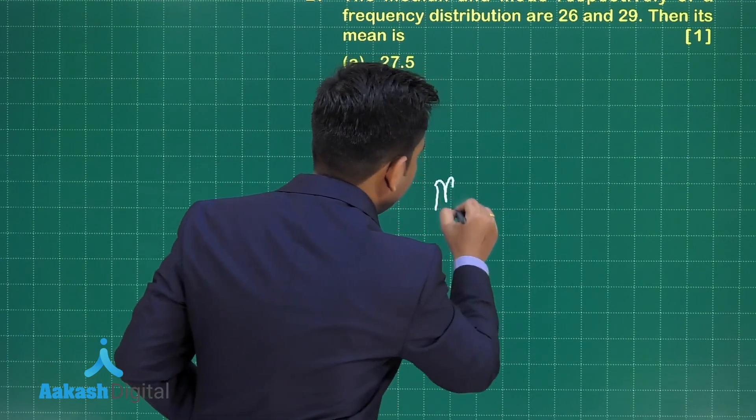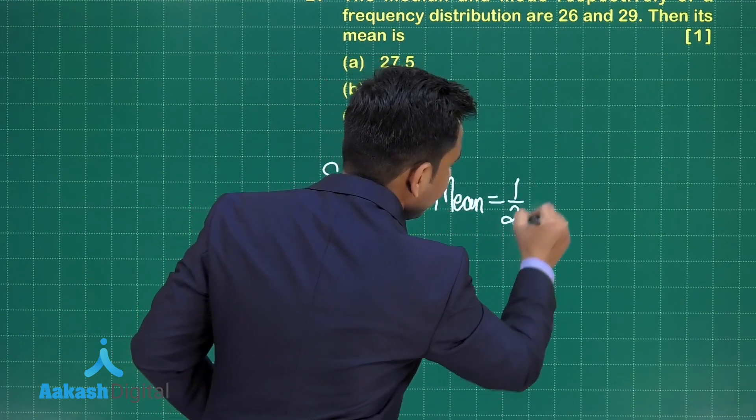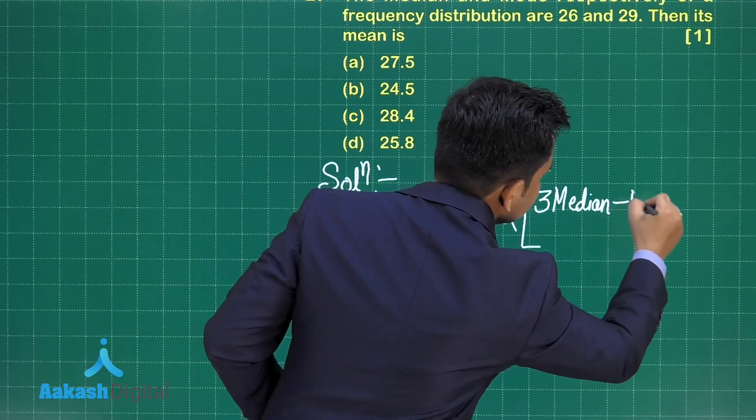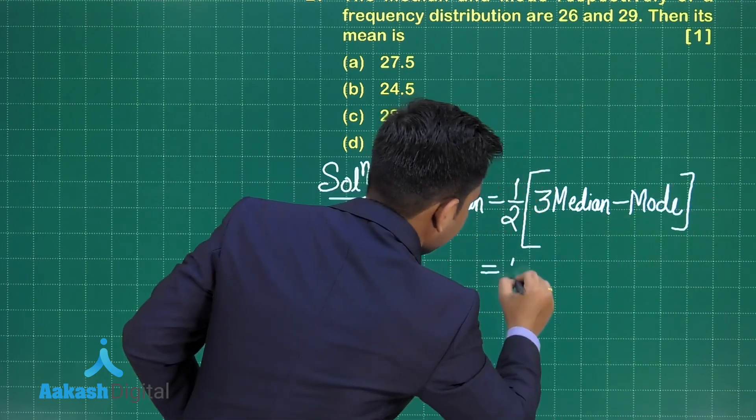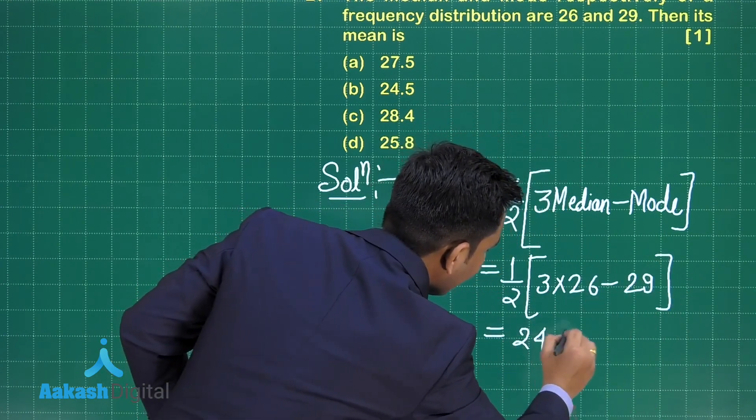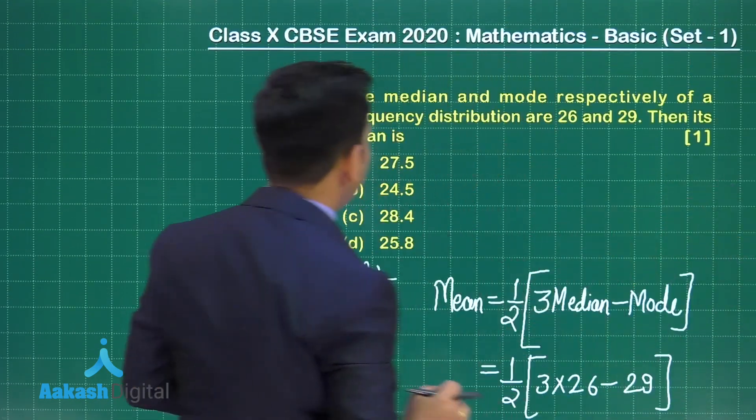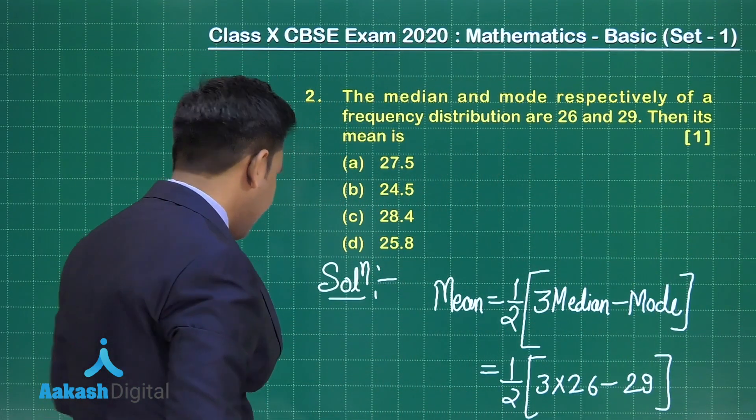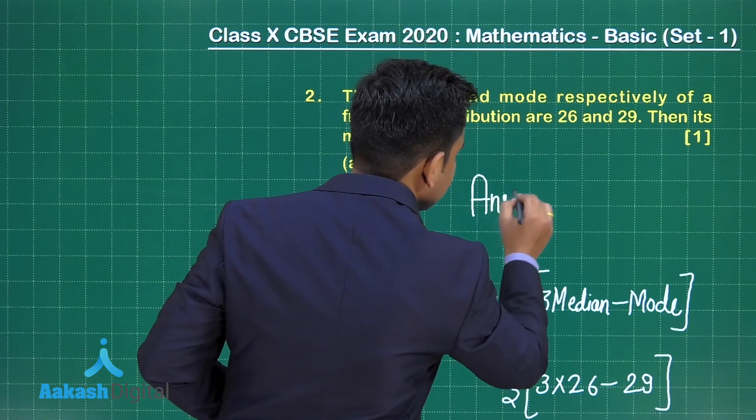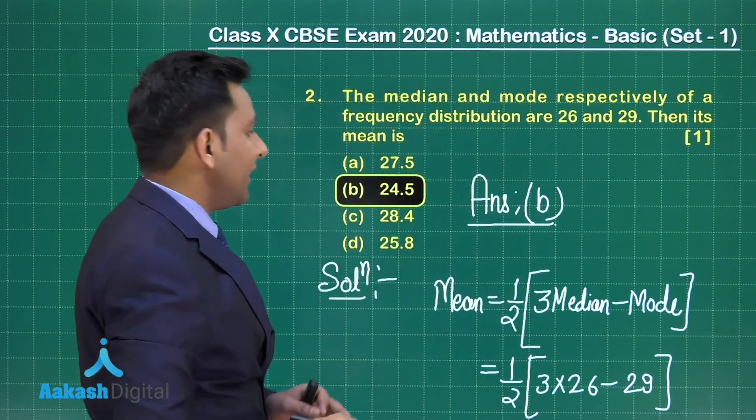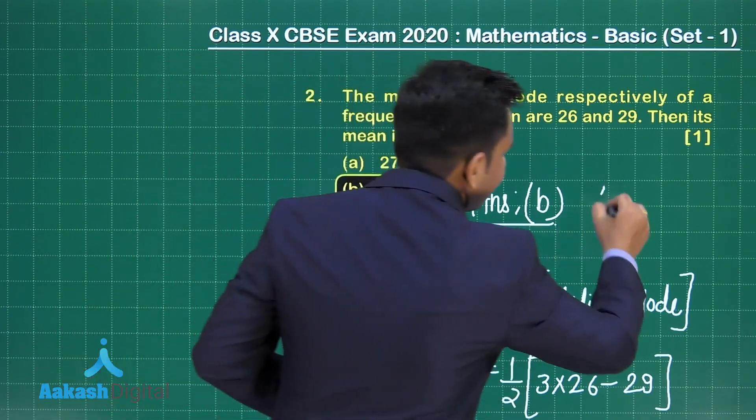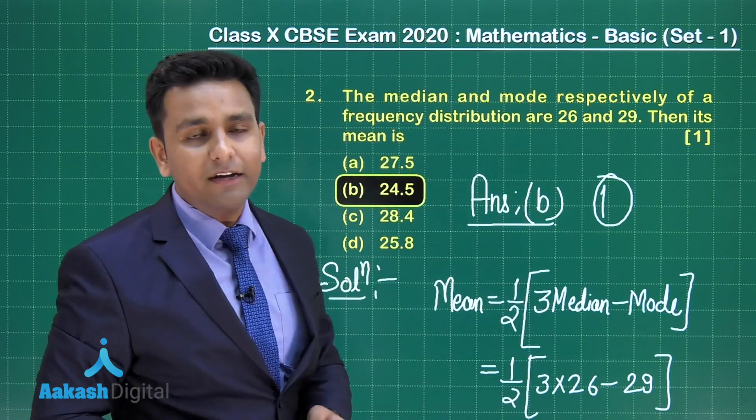Using empirical formula, we can write mean equals 1/3 multiplied by 3 times median minus mode. Median is 26 and mode is 29. When we simplify this, we get 24.5. That is the value of the mean for this given data set. Option B is the correct choice for this question. If you have ticked the mean 24.5, then you are getting one mark for this question. I hope it is clear to everyone. Now let's proceed to the next question.